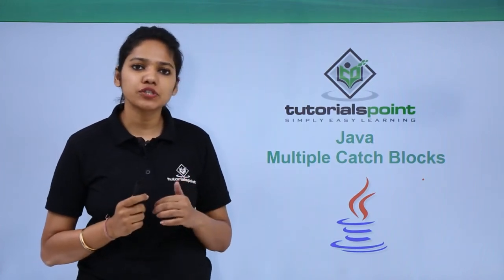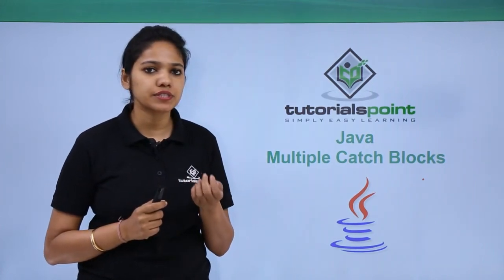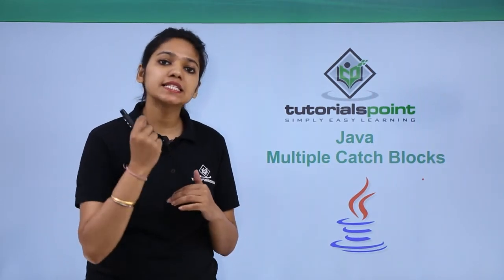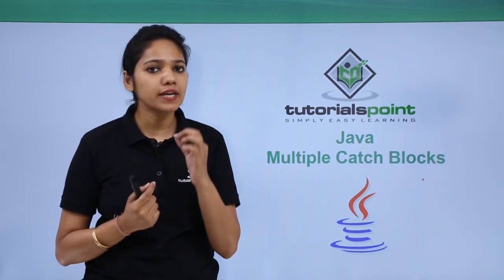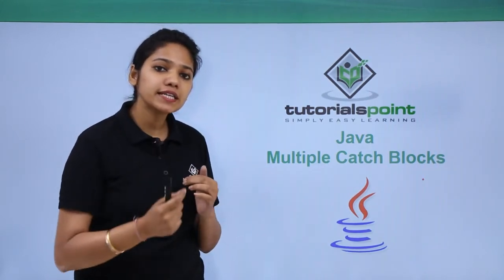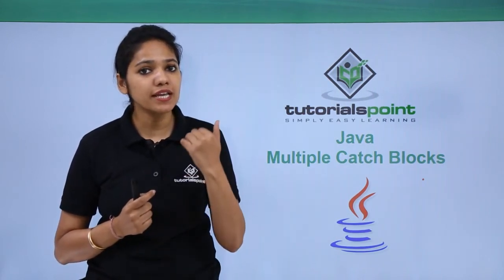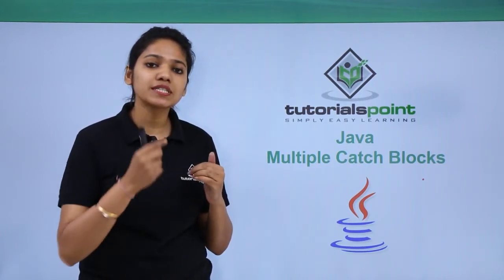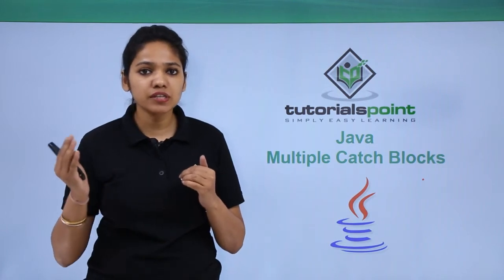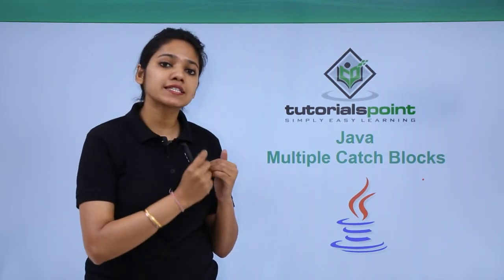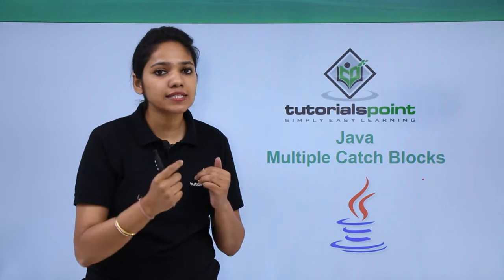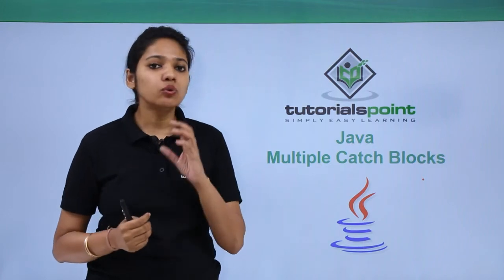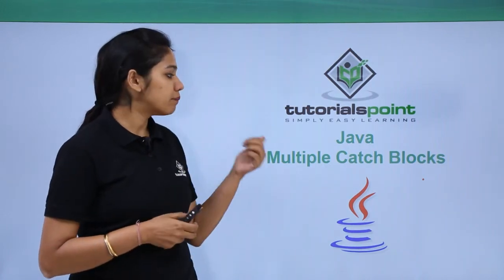By now we know what exceptions are and who can handle them. These exceptions can be handled with the help of a try-catch block. But this is the scenario where a method throws one exception. What about cases where a method can throw more than one exception? These exceptions need to be handled by different exception handlers, or an exception may need to be handled by its chained exception handler. In those cases we use multiple catch blocks.